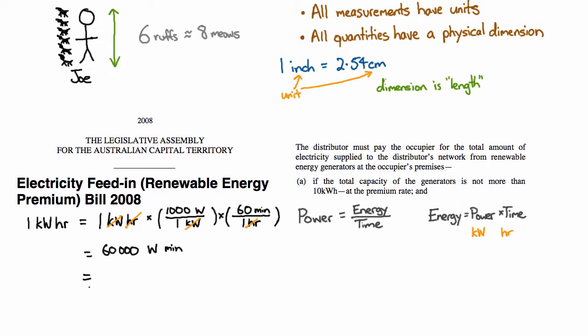That's still not a particularly standard unit of energy, so let's keep going. I've got 60,000 watt minutes. Now what's a watt? A watt is a joule per second. That's how it's defined. And I've got a minute on the top here, so I'm going to want to put a minute on the bottom there.